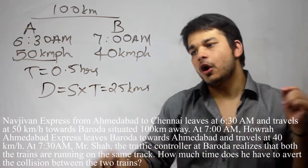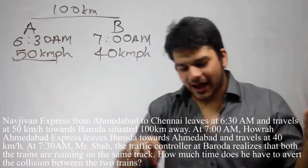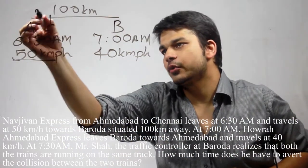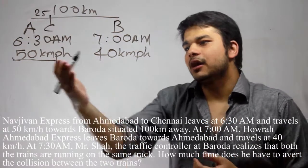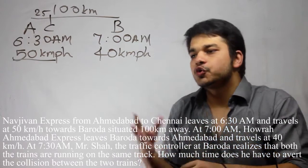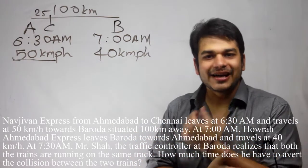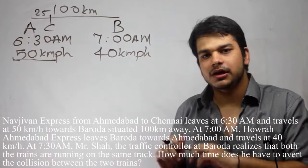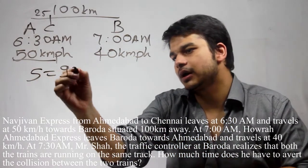At 7 o'clock, we have a point C which is 25 km from A. Now both the trains are running towards each other, so their relative speed will be 50 plus 40, which is 90 km per hour.